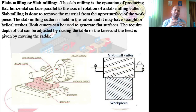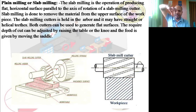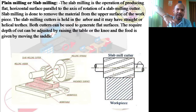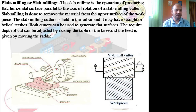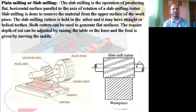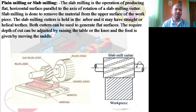The component that supports the tool is called an arbor. Think of the tool as fingers and the arbor as the forehand supporting them. The arbor is fixed to the spindle, which makes it rotate. Slab milling is done to remove material from the upper surface of the workpiece — it cannot go inside. The slab milling cutter is held in the arbor.